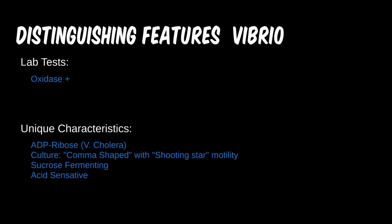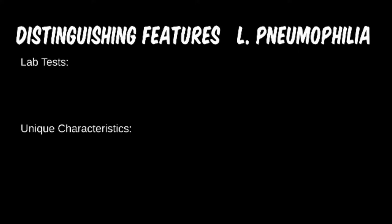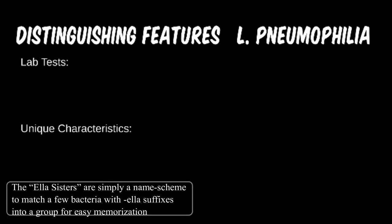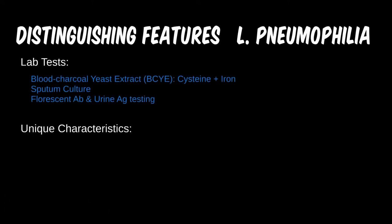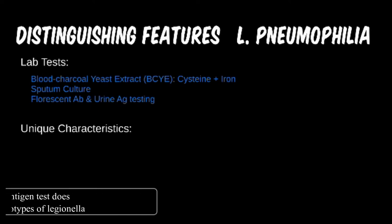For our respiratory infections, let's begin again with Legionella. This one fits better in this module than with the other Ella sisters. It is a difficult microbe to culture, requiring a special blood charcoal yeast extract (BCYE) culture medium, which contains the cysteine amino acid and iron mineral. Alternatively we could try to culture with a sputum sample, but urine antigen testing is a much more common testing method.